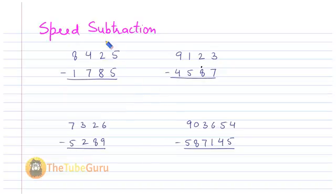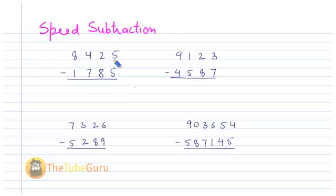In this video we will learn how to subtract two numbers very quickly. Here I have taken four examples, so let's see this first example: five minus five equals zero.